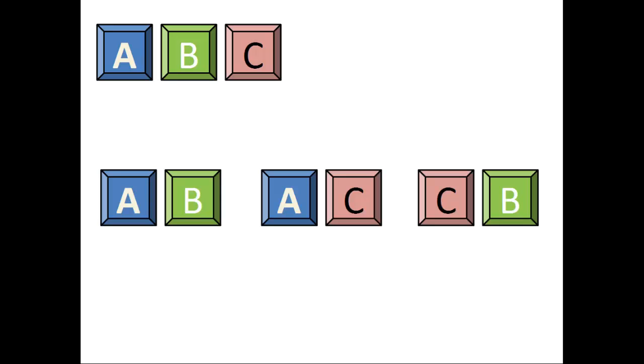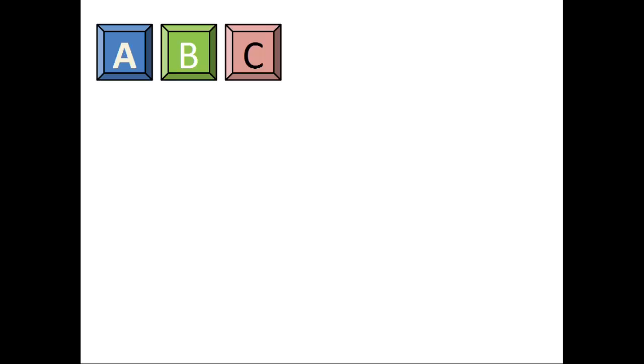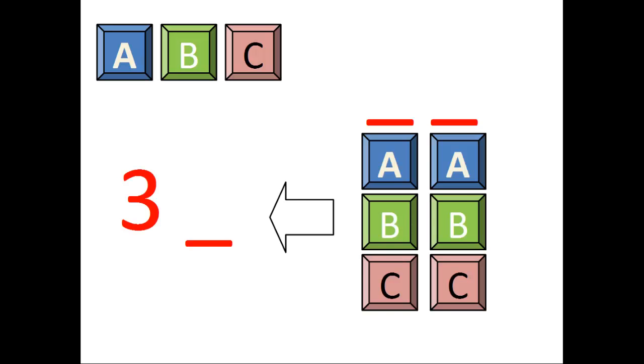We can just list out all the possibilities and see that there are three ways of doing so. But, let's use the techniques of the previous section and see how far we get. So, we have two slots for three letters. The first slot has three possibilities, and the second slot has two possibilities. Which means by the rule of product, we have 3 times 2 equals 6 possibilities in total.